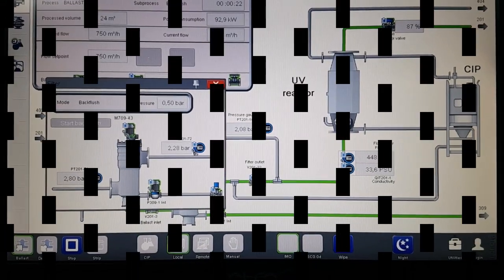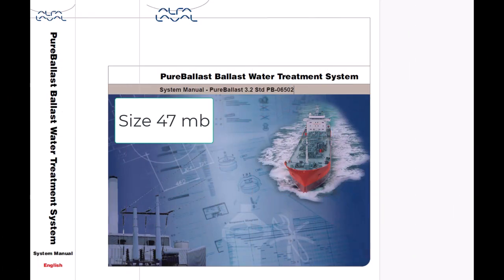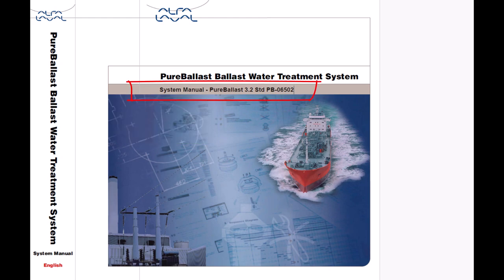As a bonus under this video, you can download the system manual for Pure Ballast water treatment system by Alpha Laval, version 3.2. It contains much useful information — about 600 pages. This is the Alpha Laval system I have mostly encountered on board.